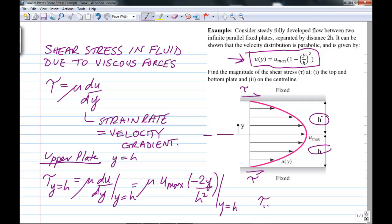So we're going to get tau at y equals h equals minus 2 mu u max upon h.